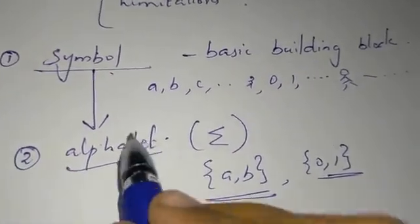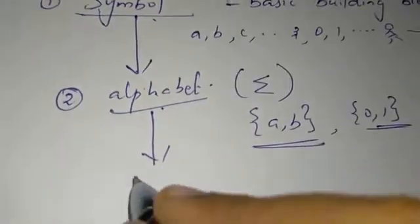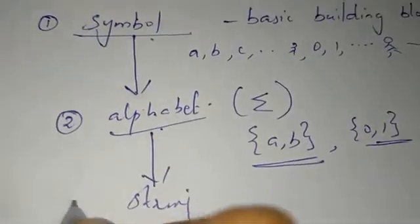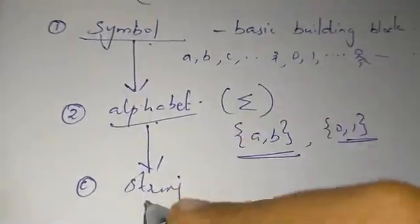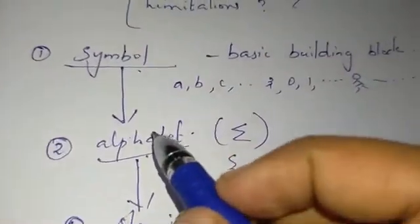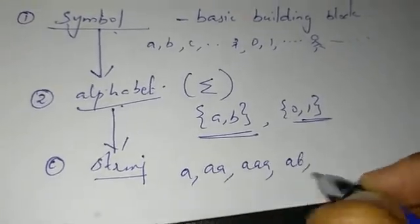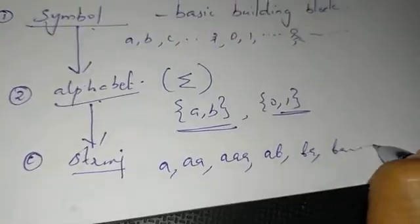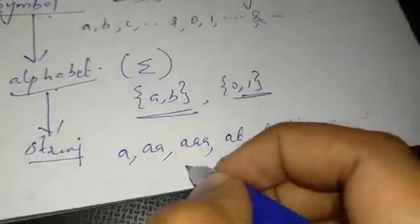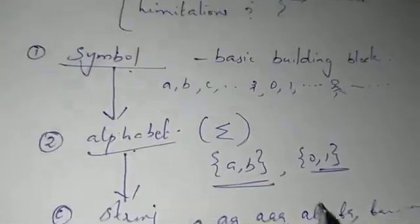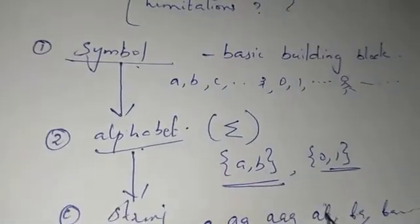Next, we call a group of alphabets a string. A group of alphabets is called a string. For example: A, A, A, B, A — or 0, 1, 1, 0, 1, 1. That is, we call a group of alphabets a string. For example, with alphabet {0,1}, a 1-length string is 0 or 1, and a 2-length string is 0-0, 0-1, 1-0, or 1-1.